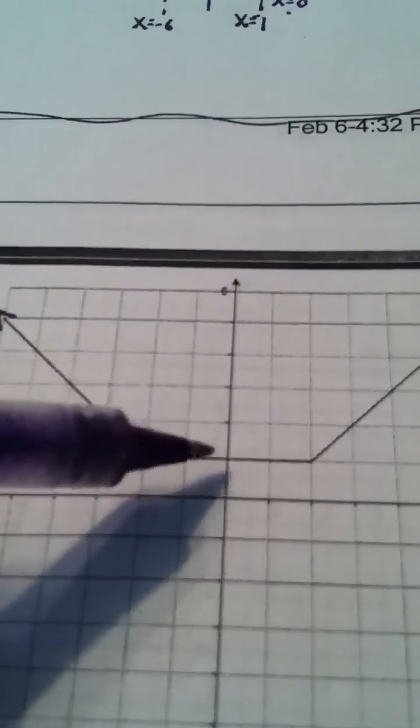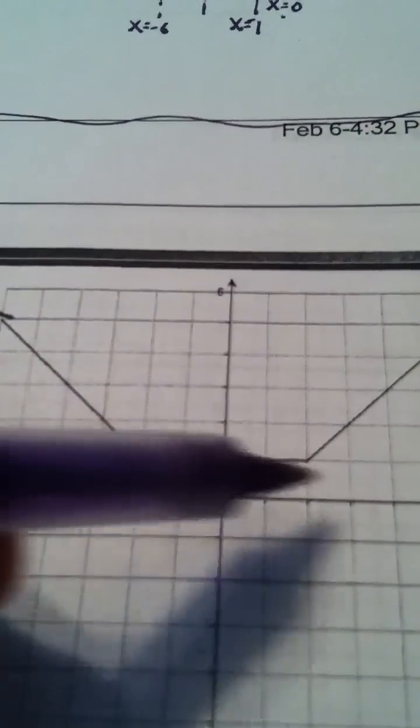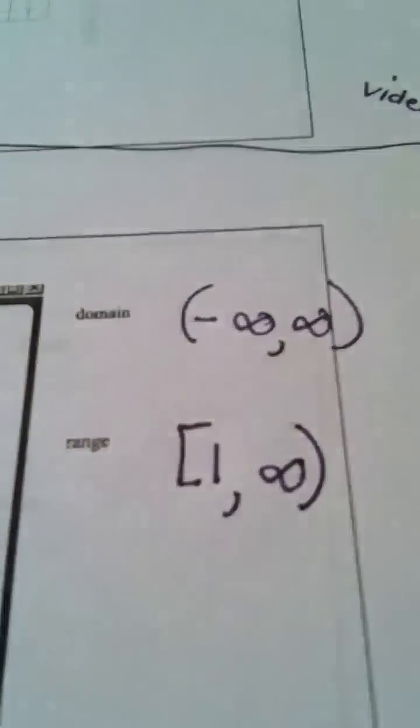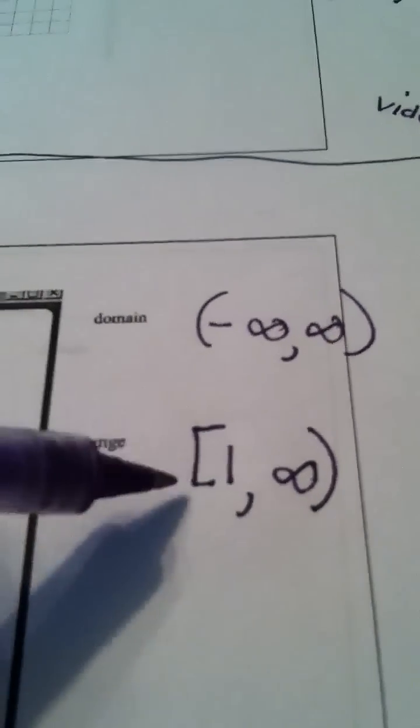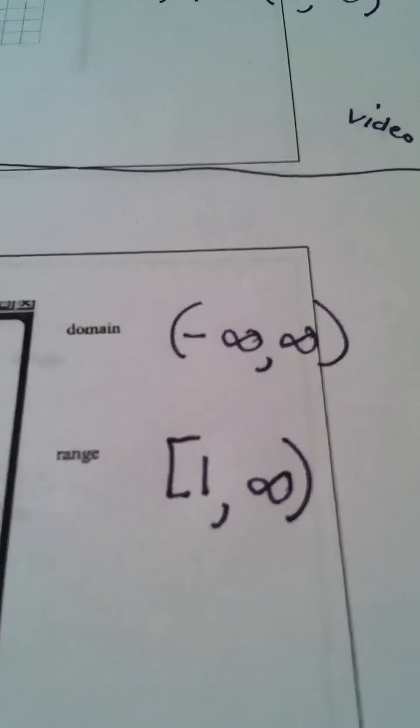And 1, by the way, is included because the number 1 is part of these ordered pairs. So the way you would write range is you would put bracket 1 comma infinity, from 1 including 1 and then it would just go on forever.